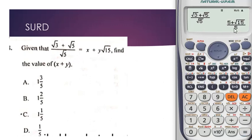So we have the final answer: five plus root 15, all over five. This means we have five plus root 15 over five, which is the same as five over five plus one over five times root fifteen.